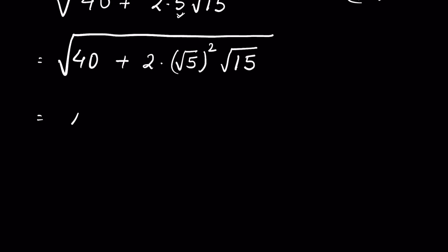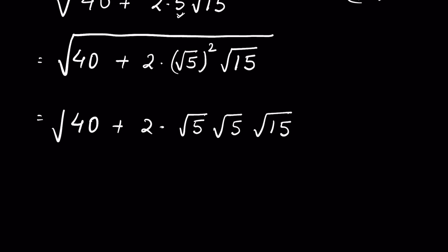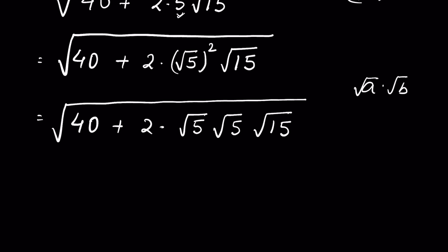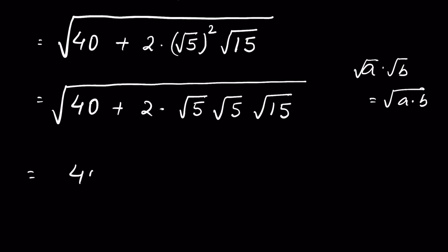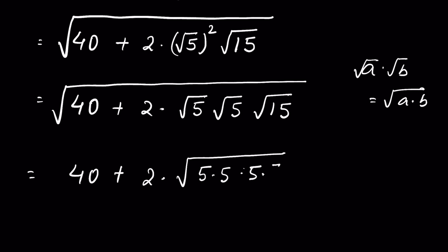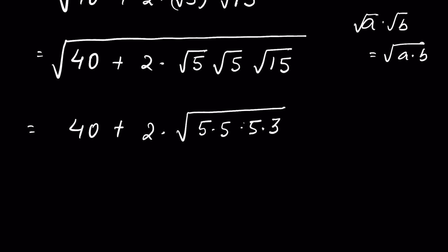So we have 40 + 2×√5×√5×√15 under the square root. We can write √5×√15 as √(5×15). Then rewriting: 40 + 2×√5 × √(5×3), which is √5 × √(5×3) = √(5×5×3) = √(25×15) under the square root.